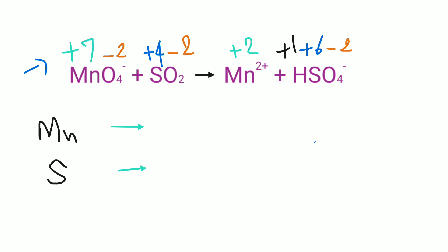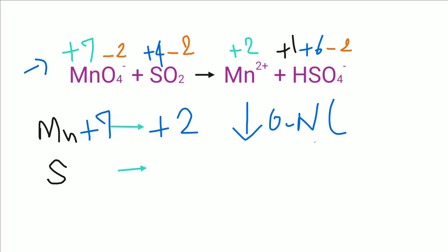If we analyze the oxidation numbers of manganese and sulfur, there is a change in both. In manganese, the oxidation number changes from plus 7 to plus 2, so there is a decrease in oxidation number — manganese undergoes reduction. The decrease in oxidation number is plus 5.